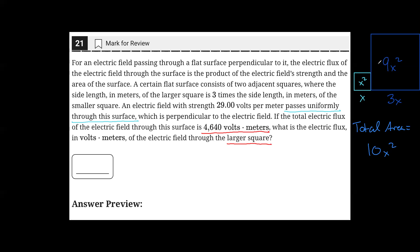Well, if we know the area of the larger square is 9x squared and the total area is 10x squared, we can set up a proportion to determine how much of the electric flux had to go through the larger square, since it states that the electric field passes uniformly through the surface.